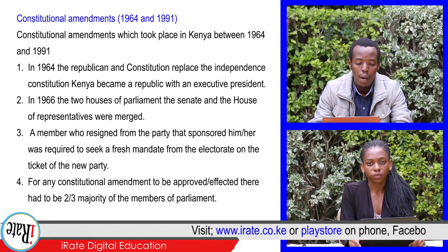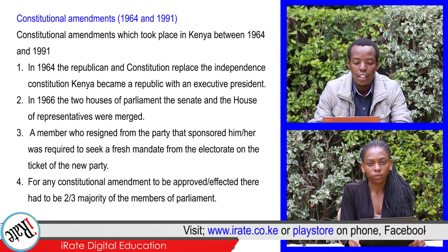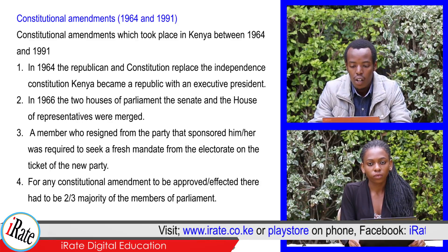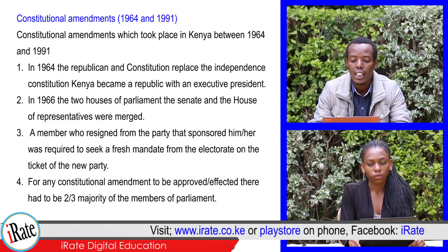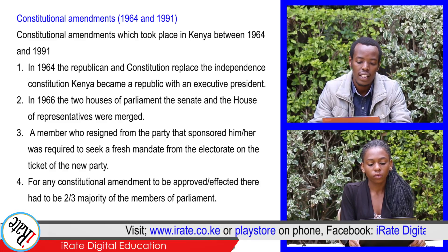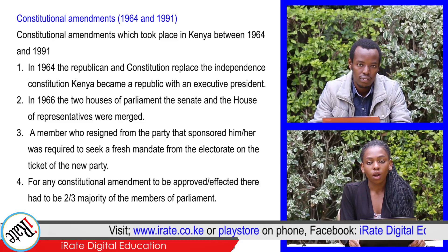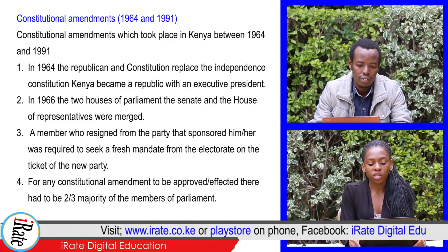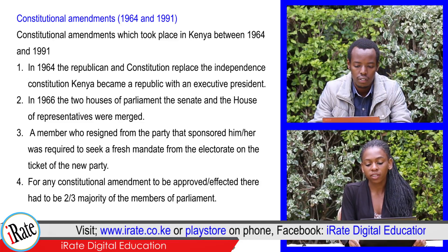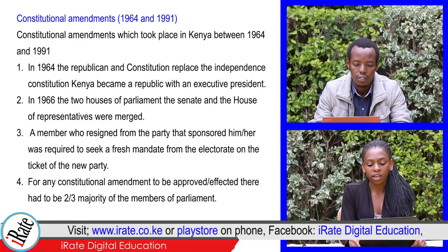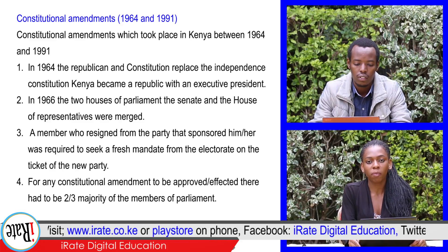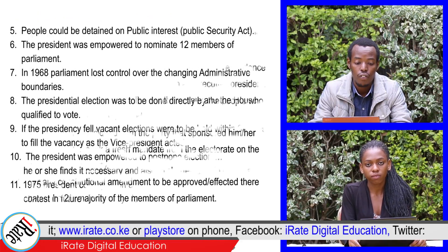3. A member who resigned from the party that sponsored him or her was required to seek a fresh mandate from the electorate on the ticket of the new party. 4. For any constitutional amendment to be approved or effected, there had to be a 2/3 majority of the members of Parliament.